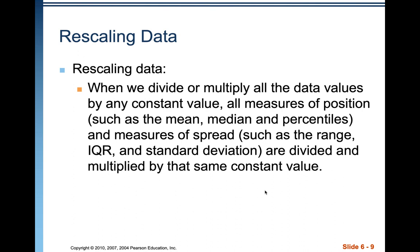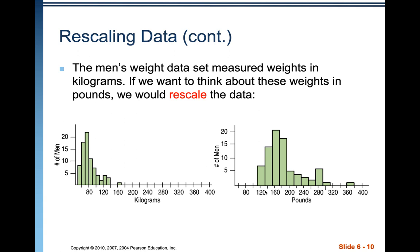When we divide or multiply all the data values by a constant value, that's called rescaling the data. All measures of position — such as mean, median, and percentiles — and measures of spread — such as the range, IQR, and standard deviation — are divided or multiplied by that same constant value. So if we multiply all those weights in kilograms by the conversion factor to pounds, that rescales the data, multiplying all values and also increasing the spread by the same constant. The shape of the distribution does not change.